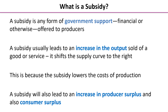So let's formalise — what is a subsidy? It's any form of government support. It can be financial, which is the usual case, or otherwise, and it is offered to producers in 99.9% of cases. Because it's offered to producers, it tends to shift the supply curve to the right. If you imagine a demand and supply diagram with the supply shifting right due to lower costs of production, this will increase output and lead to a lower equilibrium market price. The subsidy will also lead to an increase in producer surplus and consumer surplus, which we'll look at in due course.